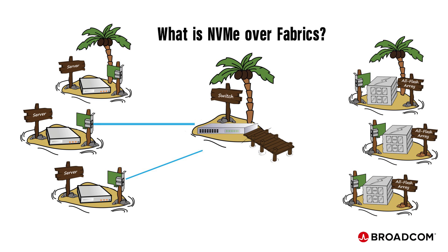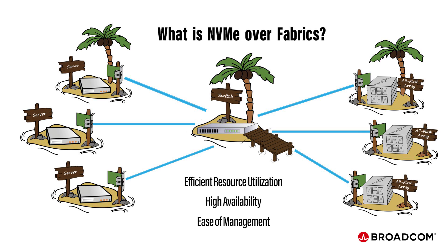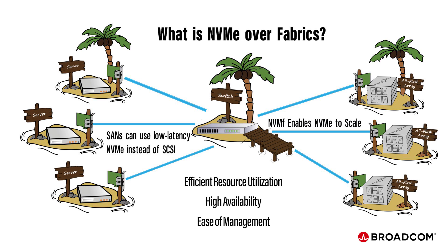SANs provide efficient resource utilization, high availability, and ease of management. Currently shared storage solutions use Fiber Channel or IP, which run over a SCSI transport. NVMe over Fabrics enables these networks to use the low-latency NVMe protocol instead of SCSI, enabling NVMe to scale and making it ideal for shared storage.